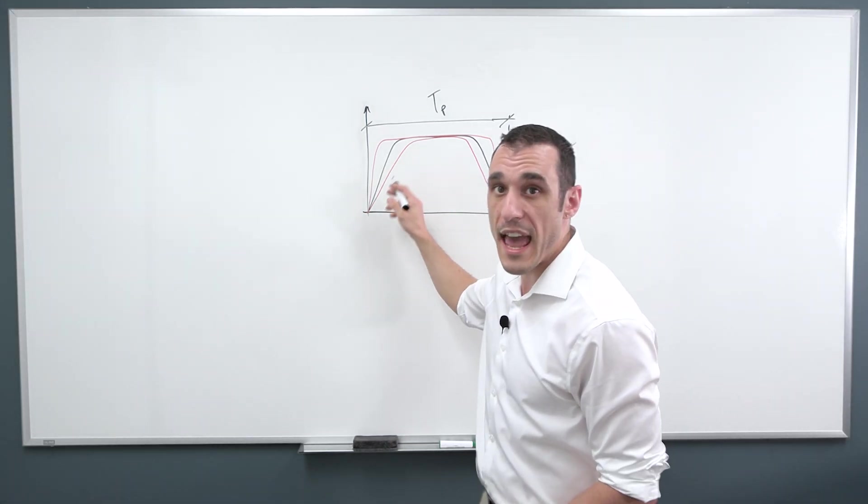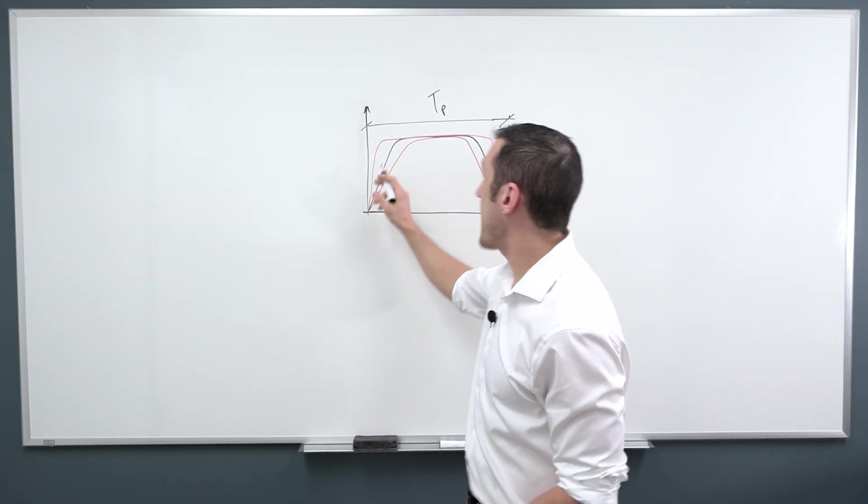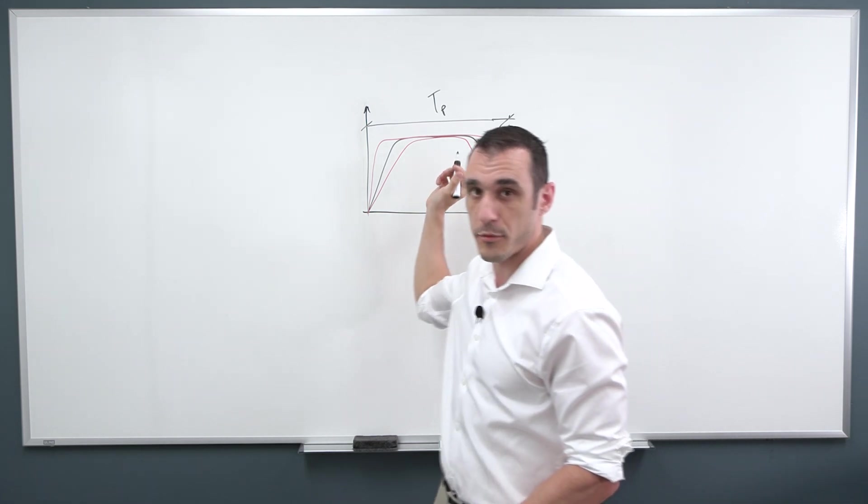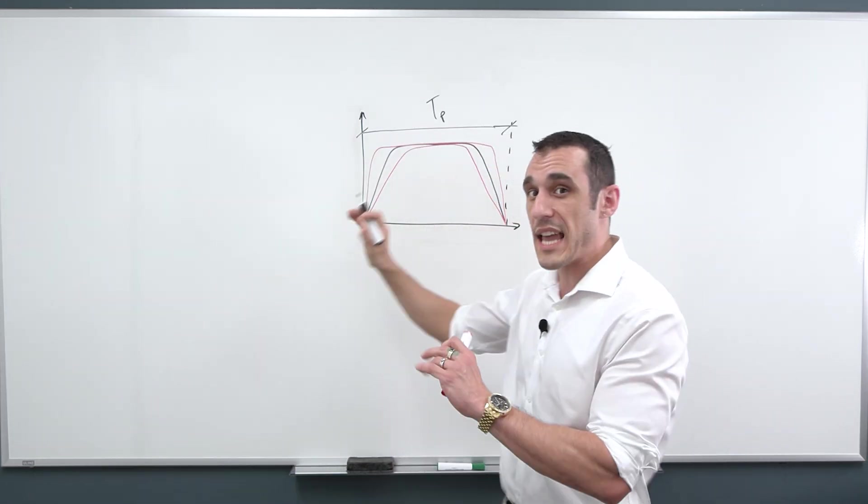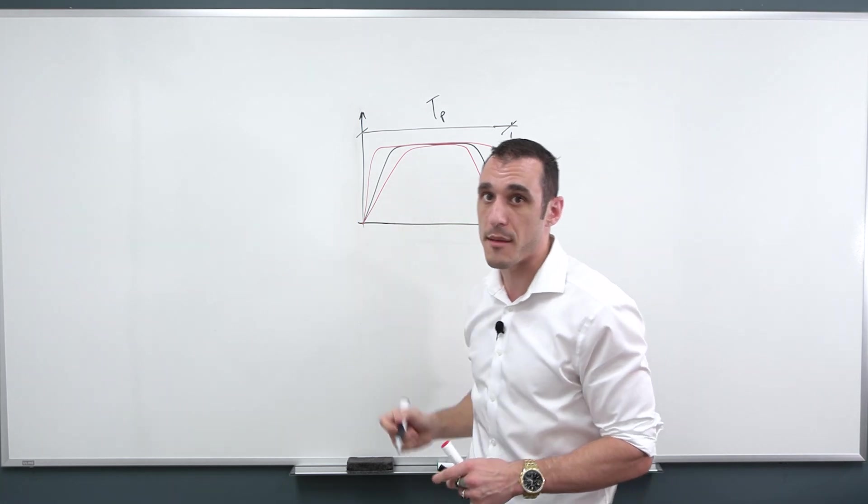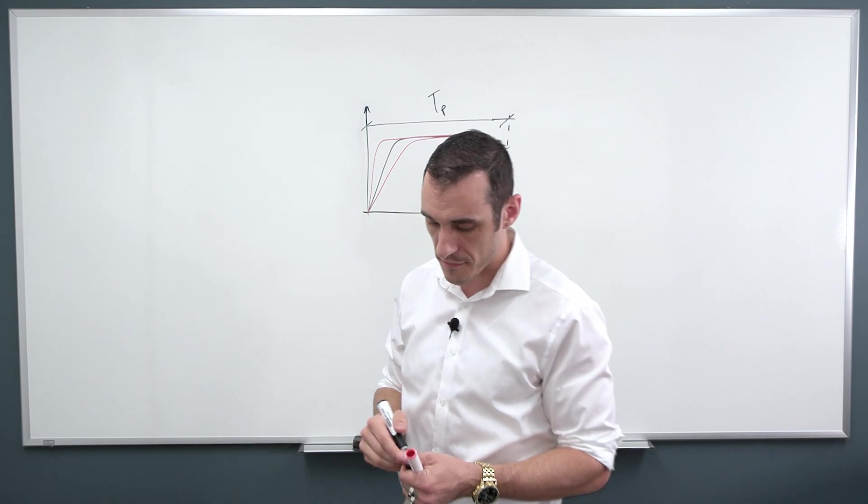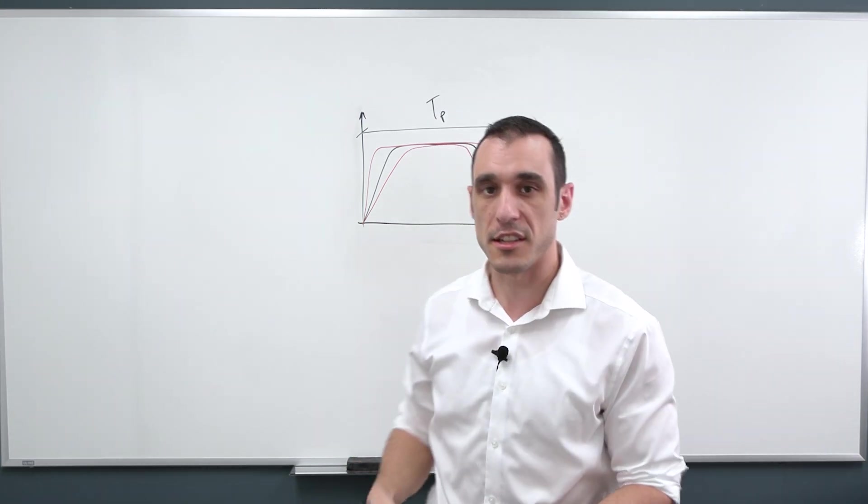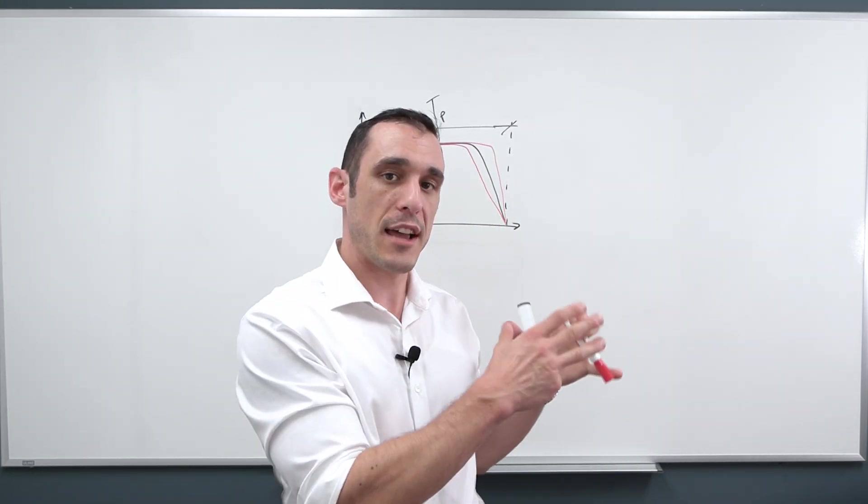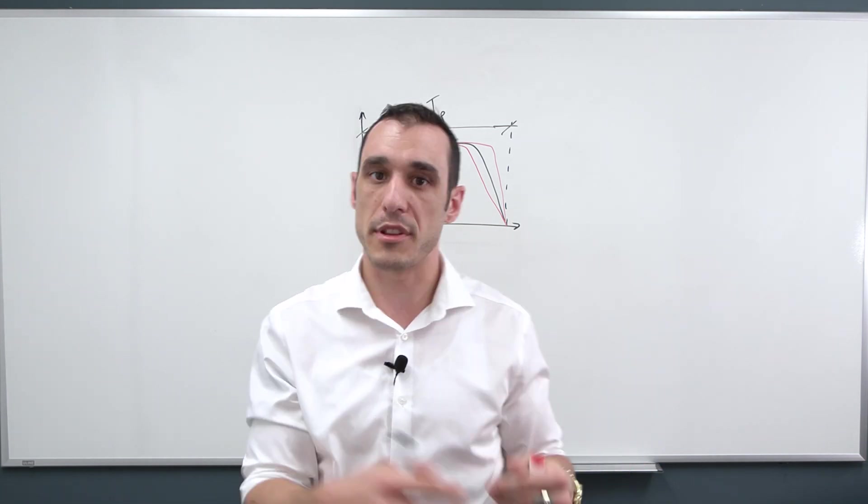Each of these different signals is going to have different frequency content, but they have the same clock frequency. So the clock frequency really has nothing to do with it. It's all based on this rise time. So this rise time is going to determine what the bandwidth of your digital signal is. So this is something that's really important because it's going to determine how well you can actually measure a digital signal, like with an oscilloscope.